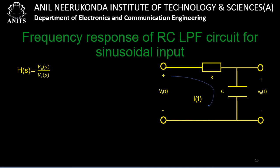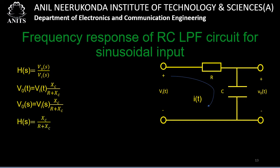The transfer function is H(s) = V₀(s)/Vi(s). The output is determined by applying the voltage division rule: v₀(t) = vi(t) × Xc/(R + Xc), since R and C are in series. Applying the Laplace transform: V₀(s) = Vi(s) × Xc/(R + Xc), so H(s) = Xc/(R + Xc).